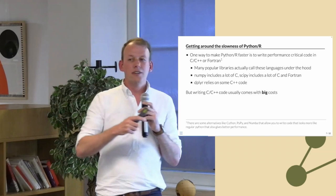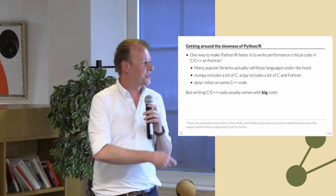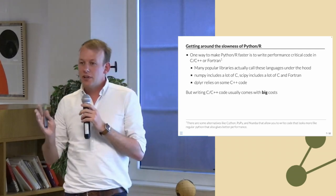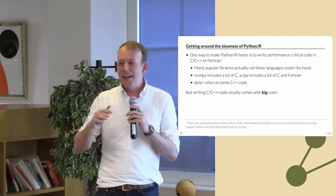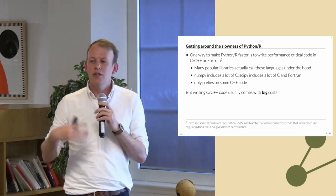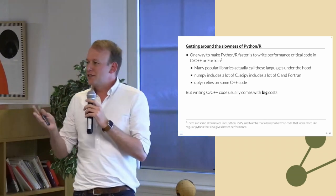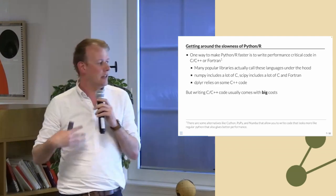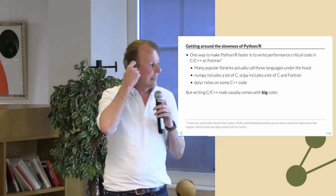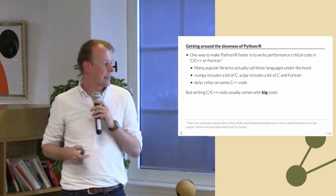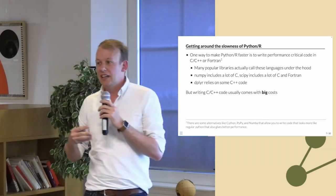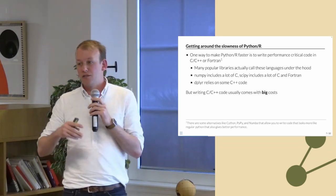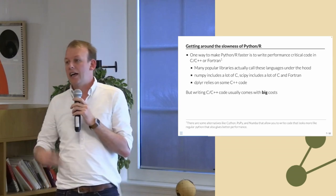How do you get around the slowness of Python and R? The hard way is to rewrite performance-critical code in C, C++, or Fortran. There are some alternatives in Python — Cython, PyPy, Numba — which allow you to write more Python-like code with higher performance, but it's still not as performant as it could be. Lots of popular libraries take the approach of writing the core in C or C++. NumPy includes a lot of C, SciPy includes some C and Fortran, pandas includes some C and Cython, and in R, dplyr includes a lot of C++ code.